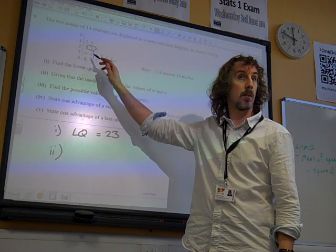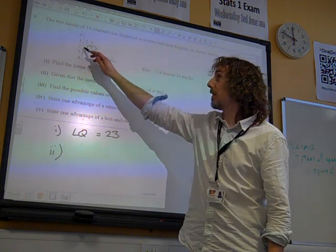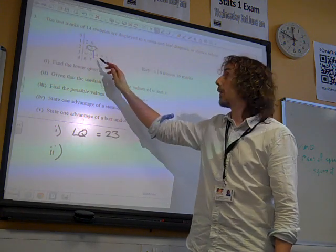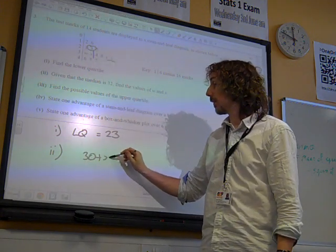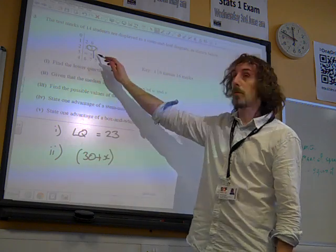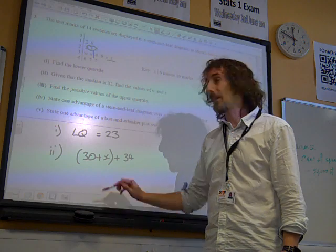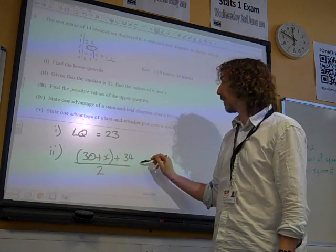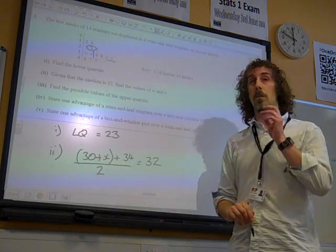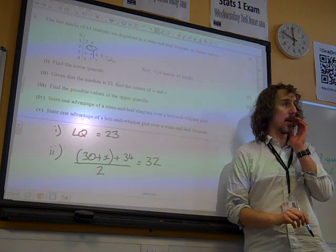Does that make sense? That number is 23, which is 20 plus 3. So the number represented by X is 30 plus X. And the number represented by 4 is 34. And the average of those two numbers is 32. That's what our median calculation tells us.